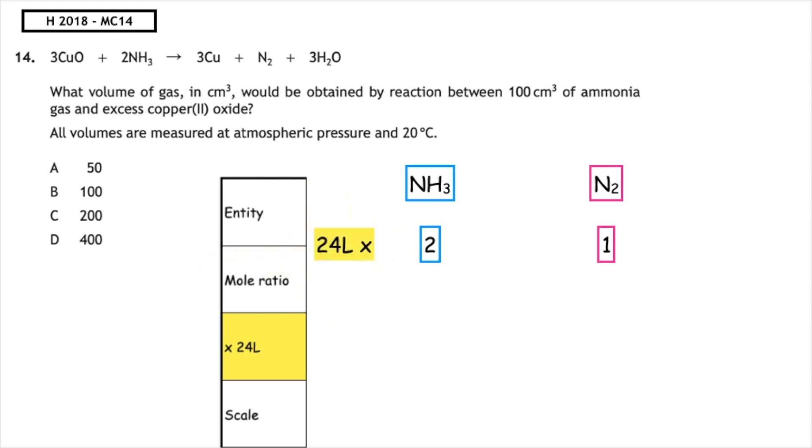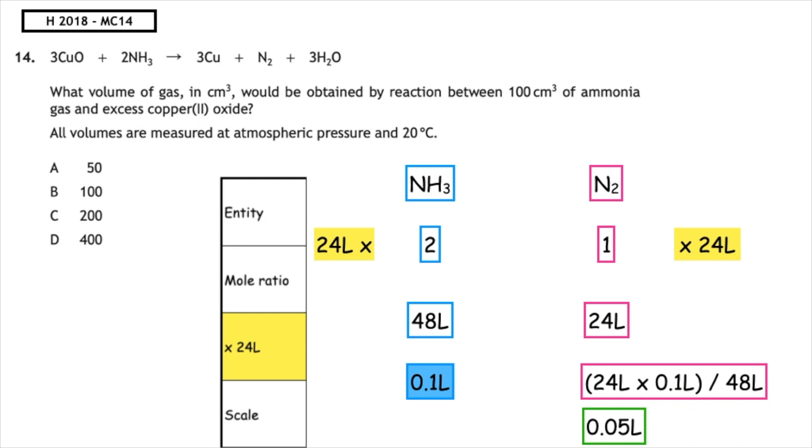We times through by 24 litres. That will give me 48 litres and 24 litres. Then we scale for the quantity given in the question. 100 centimetres cubed would be equal to 0.1 litres. Cross multiply: 24 times 0.1 divided by 48 gives us 0.05 litres, which would be the equivalent of 50 centimetres cubed.